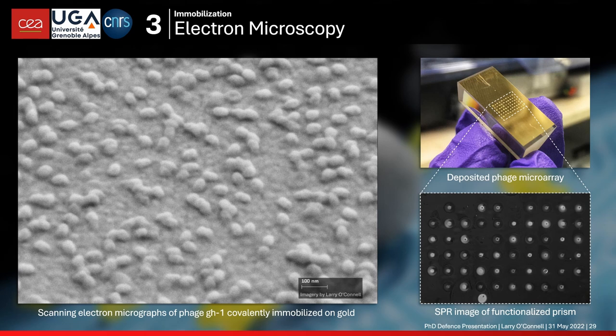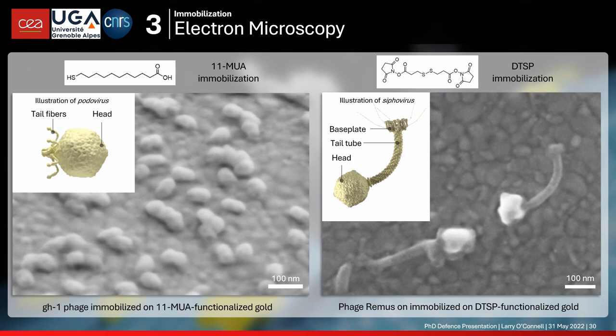This works for all the different bacteriophages we've tried. This is a podovirus immobilized via 11-MUA. We also tried different chemistries — dithiobisimidazol propionate, DTSP — which also forms the same kind of self-assembled monolayer. I present this really nice SEM image of a siphovirus called Phage Remus. It has a different morphology from the podovirus, and I want to draw attention to the level of detail: you can see the base plate characteristic of a siphovirus, and the scale bar is 100 nm — so this tail tube is just 20 nm wide, about 200 atoms.